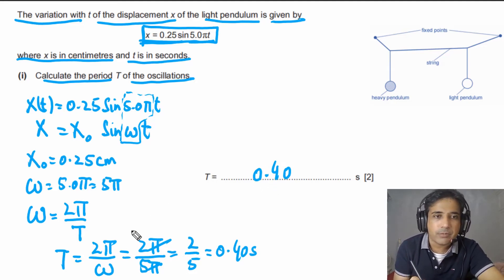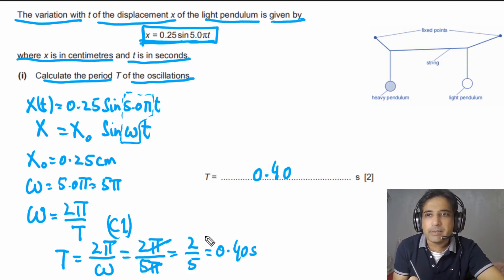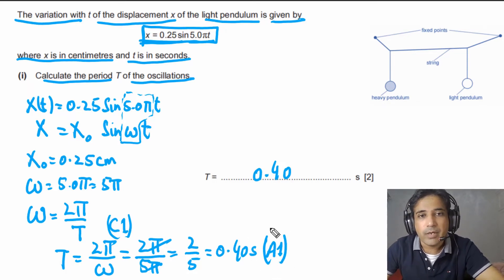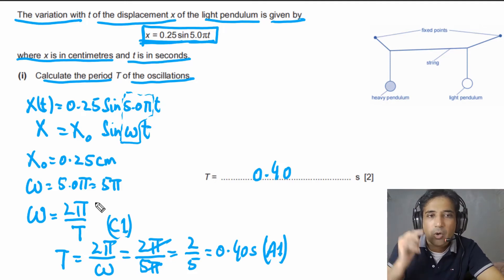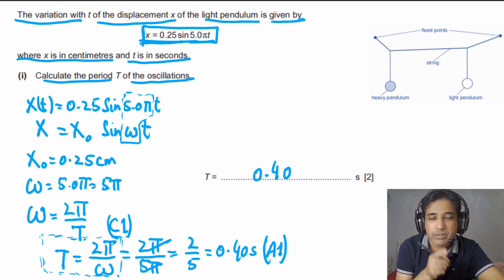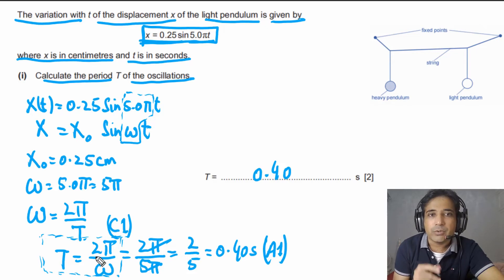This question has two marks. The first mark is awarded for writing T = 2π/ω before substituting values. The second mark is the answer mark for the correct result of 0.40 seconds. Always write down the equation before plugging in values — even if your calculation is wrong, you can still earn one mark for the equation. Be systematic when answering these problems.